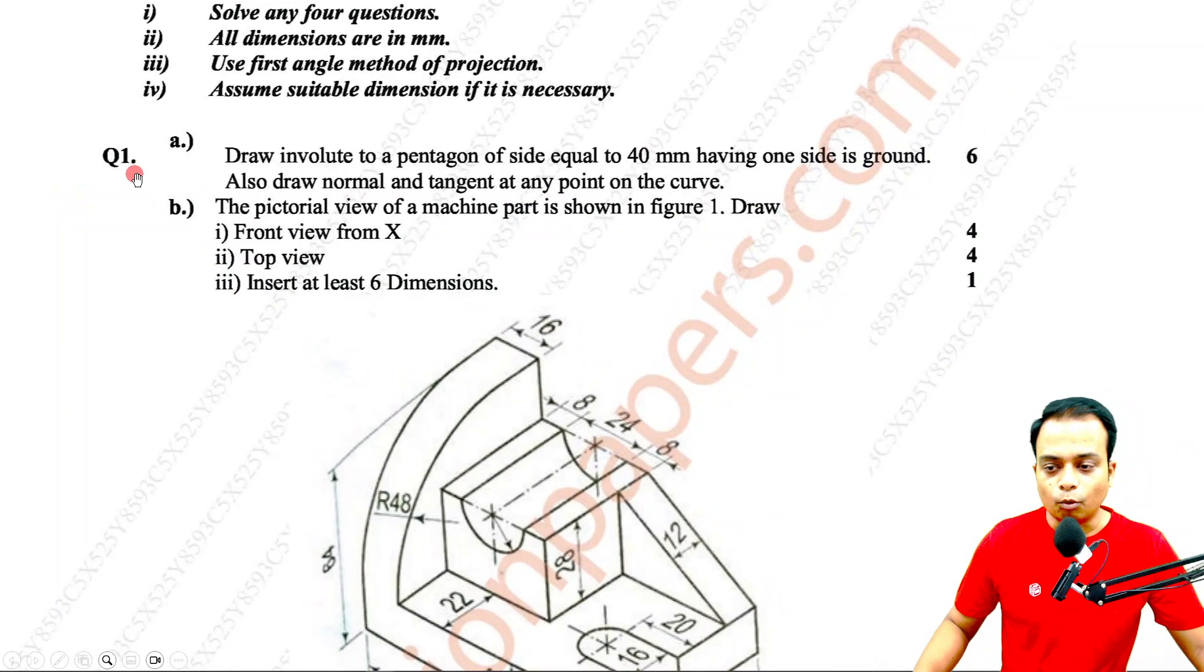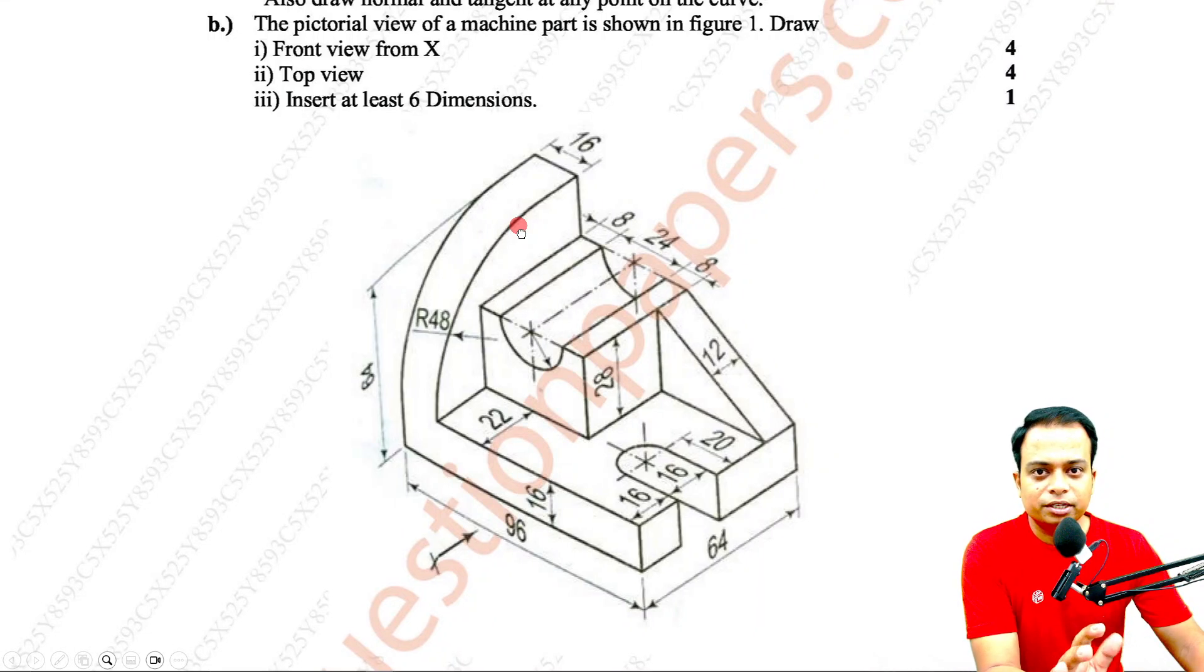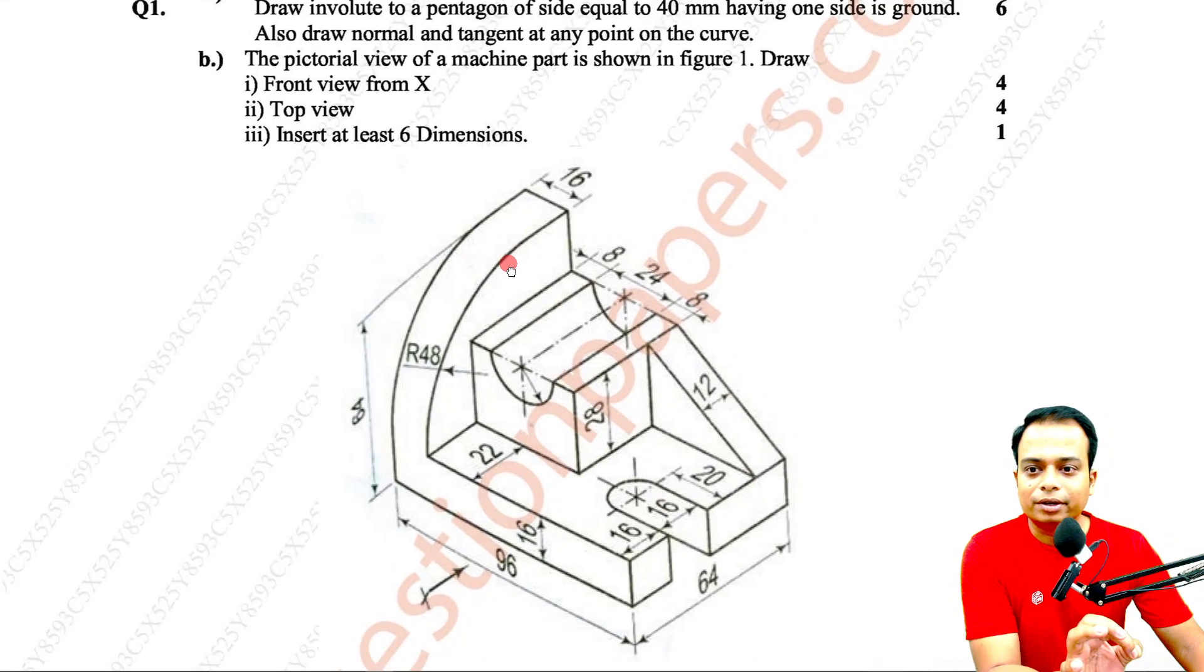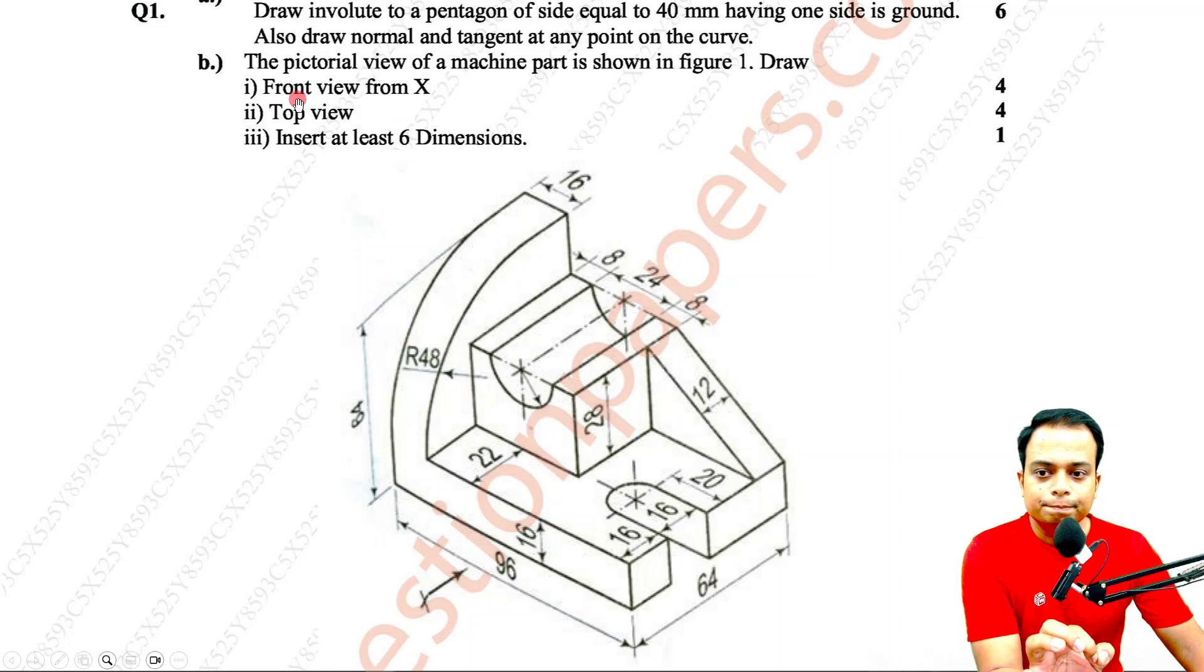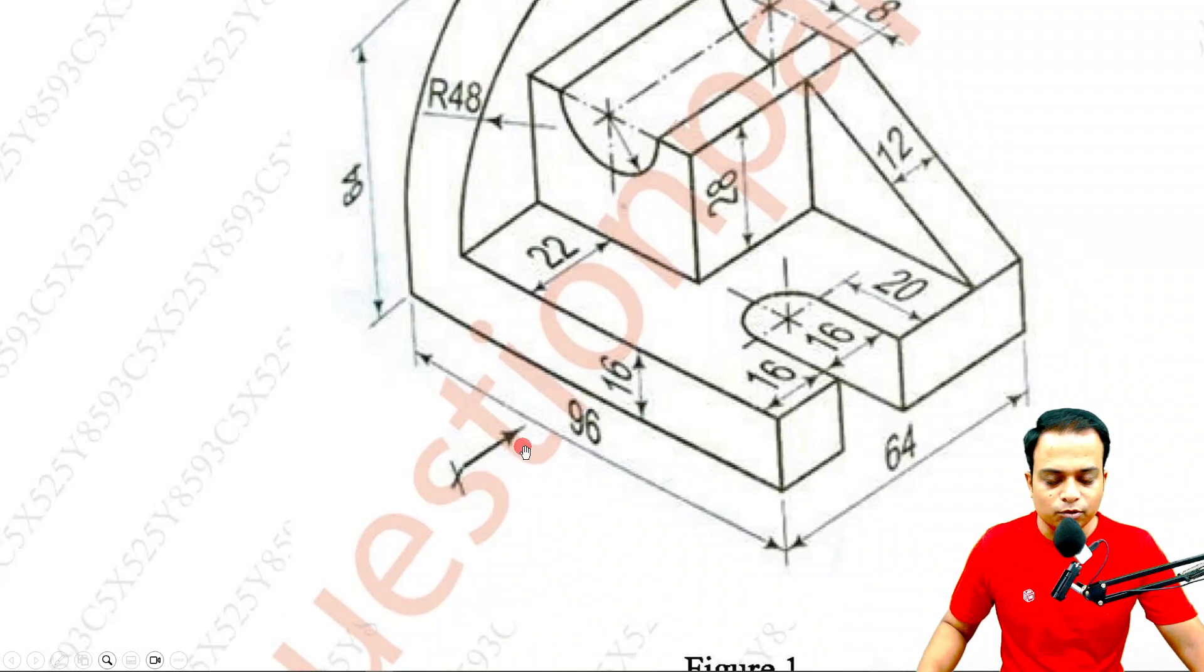The next question, question number one part B, is based on orthographic projection. It's a beautiful question we can solve in the next five minutes. There are three parts: we have to make the front view from X, which means you have to watch it from over here and create the entire front view.